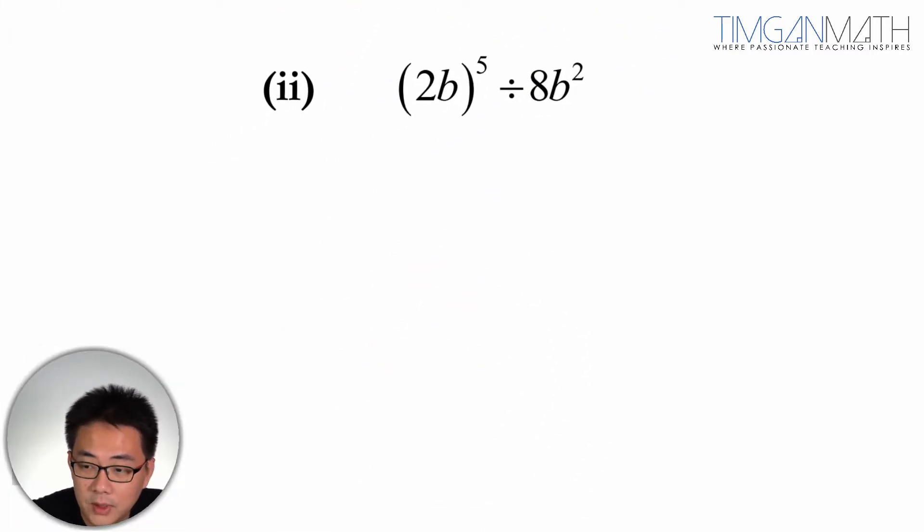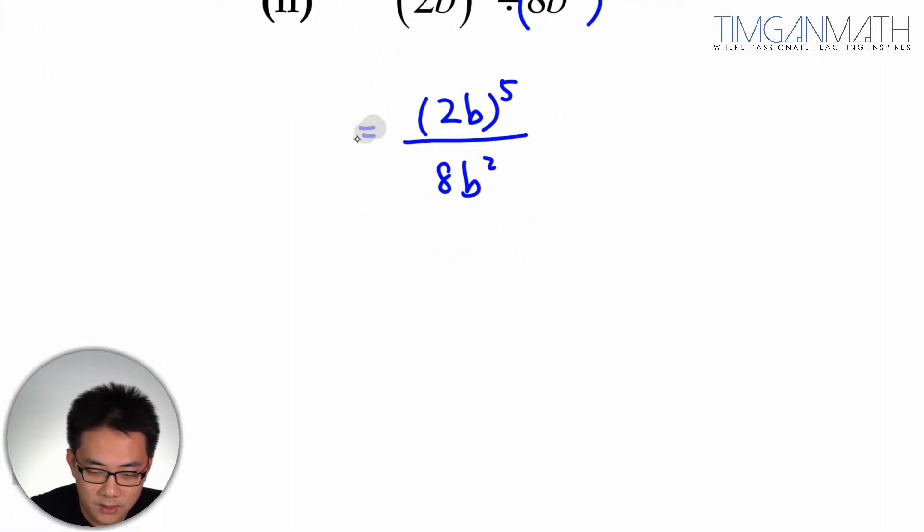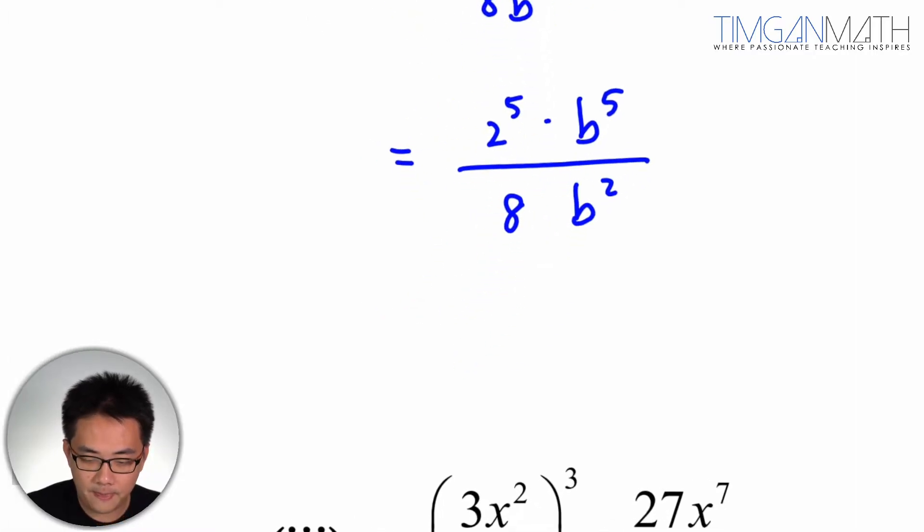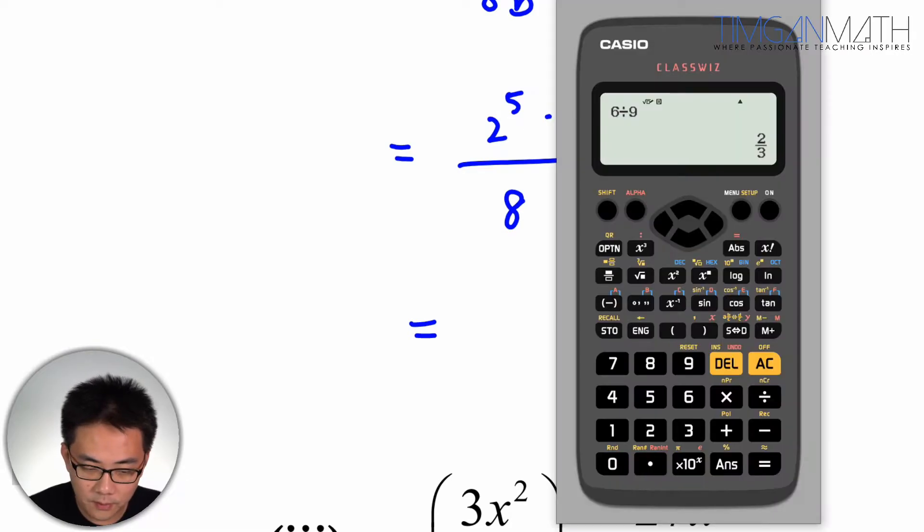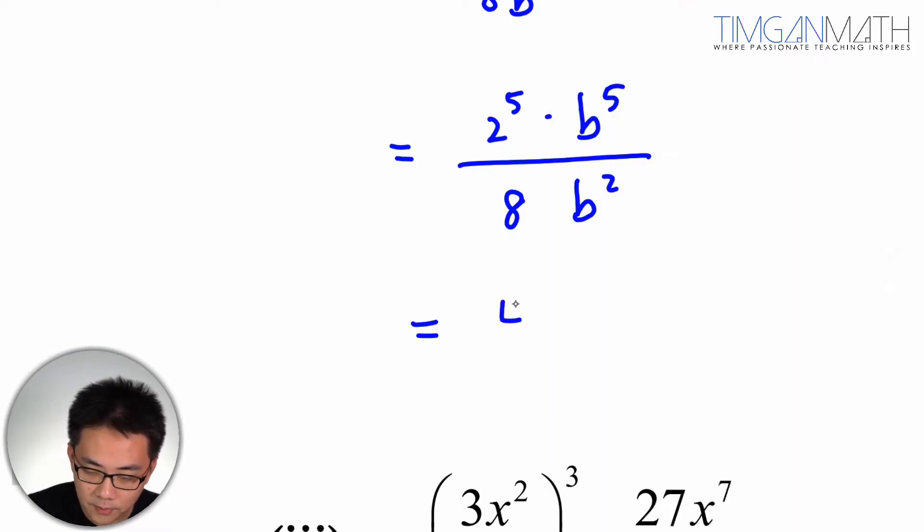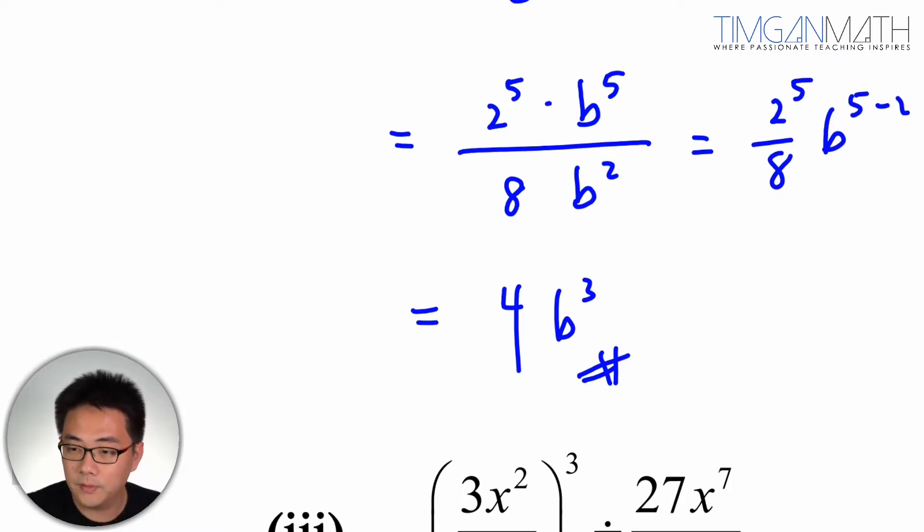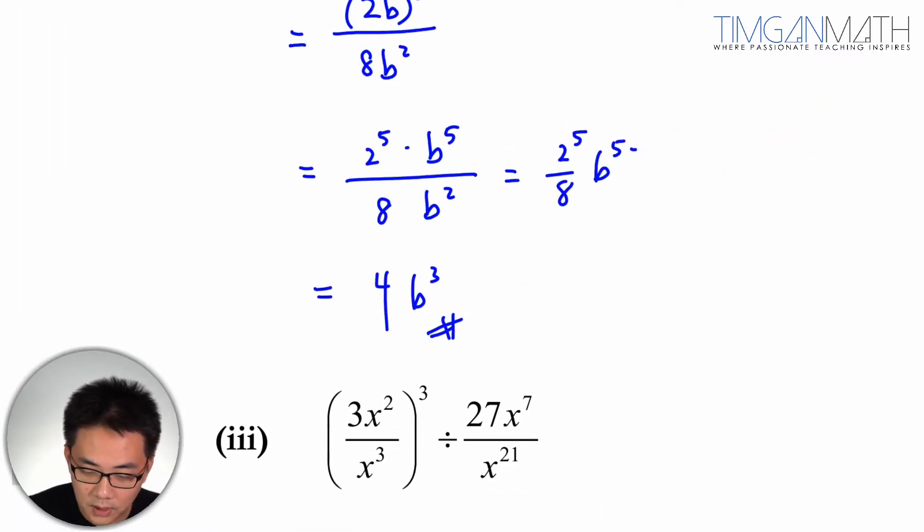Let's look at part 2. Similarly, this would be 2b to the power of 5 divided by 8b squared. So similarly, this would just be our law number 4. This is 2 to the power of 5 times b to the power 5 over 8b squared. So this case 5 minus 2 which is 3. So I could write this as 2 to the power 5 over 8 times b to the power 5 minus 2.